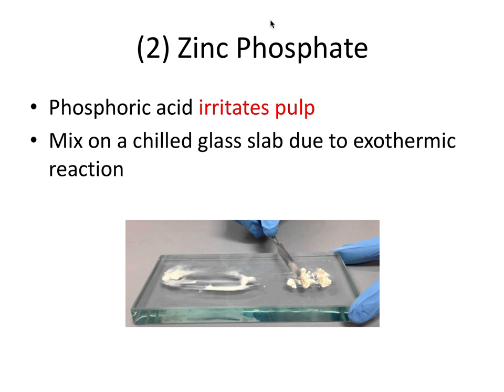Zinc phosphate was introduced in 1850, is widely considered the gold standard cement, and has the longest history of all the dental cements. It's very acidic in nature because it contains phosphoric acid, which can irritate the pulpal tissues. This is otherwise known as post-cementation pulpal sensitivity.